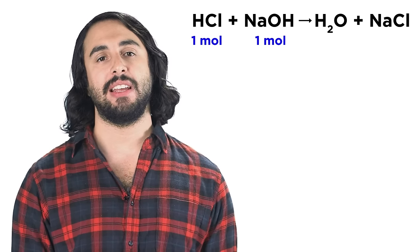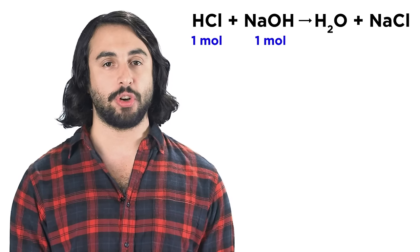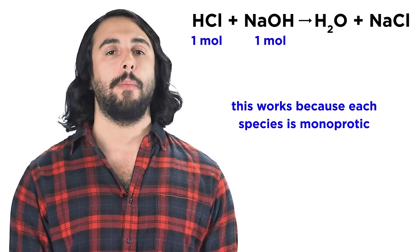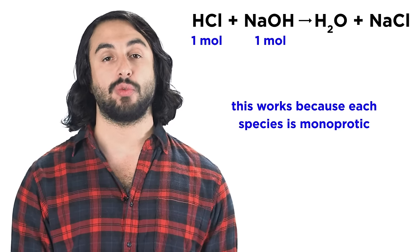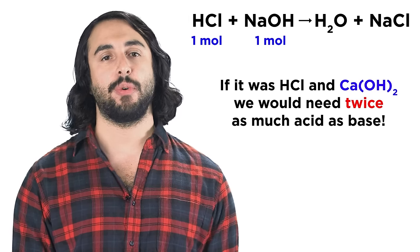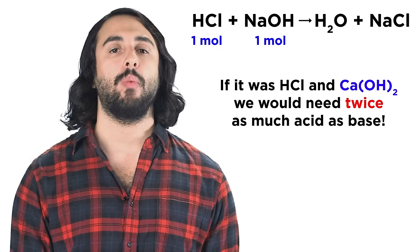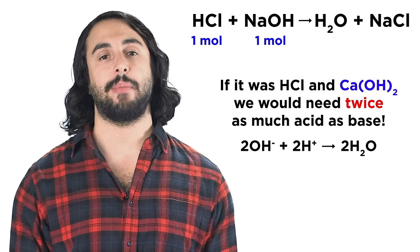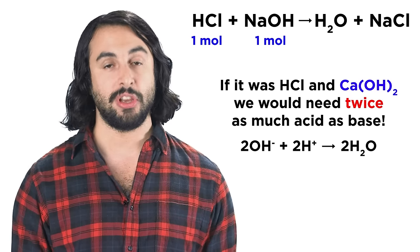For example, as we can see here, hydrochloric acid and sodium hydroxide, if mixed in equal proportions, will generate water and sodium chloride. Furthermore, because hydrochloric acid has one proton and sodium hydroxide has one hydroxide, these can be mixed in equimolar quantities. If the base had two hydroxides, like calcium hydroxide, we would need twice as much acid as base to generate a neutral solution, since each calcium hydroxide would need two protons from two acid molecules to neutralize.